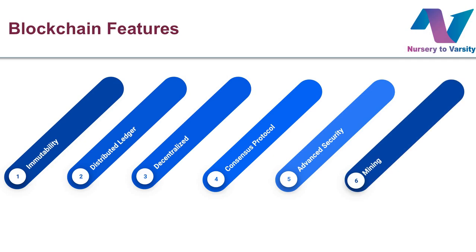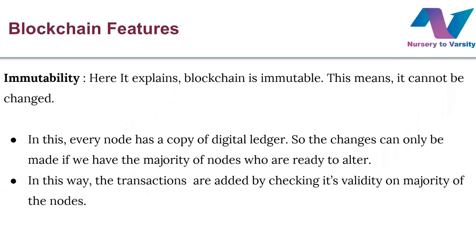First of all, what is immutability? An immutable thing is something which cannot be changed or altered. In terms of blockchain it is the same — the blockchain is immutable, meaning it cannot be altered. As explained in the previous video, if we try to tamper any block, the whole blockchain will get dissolved.